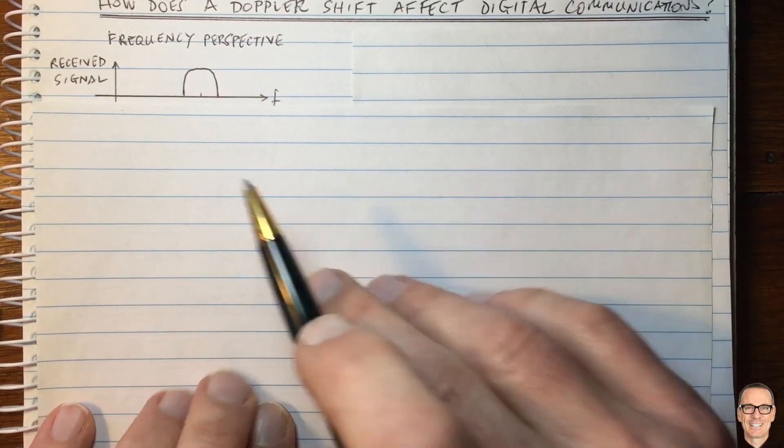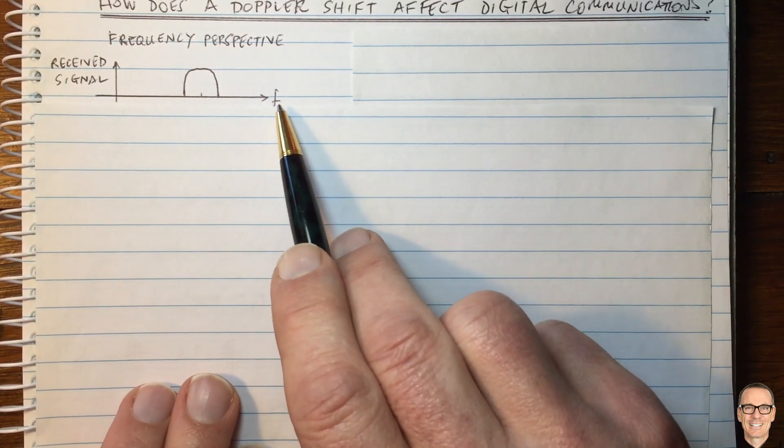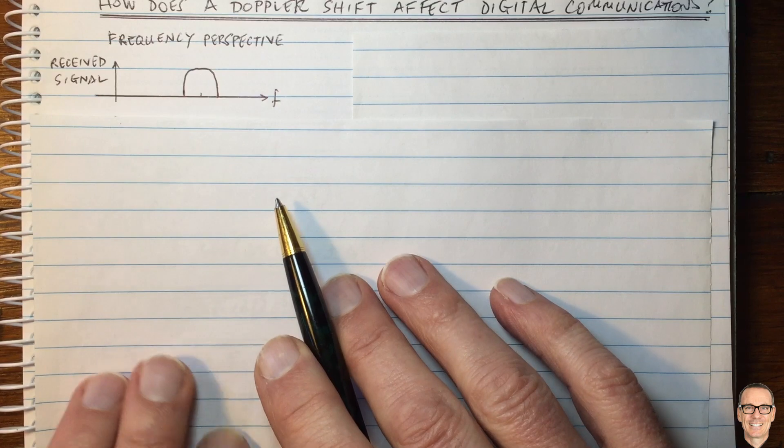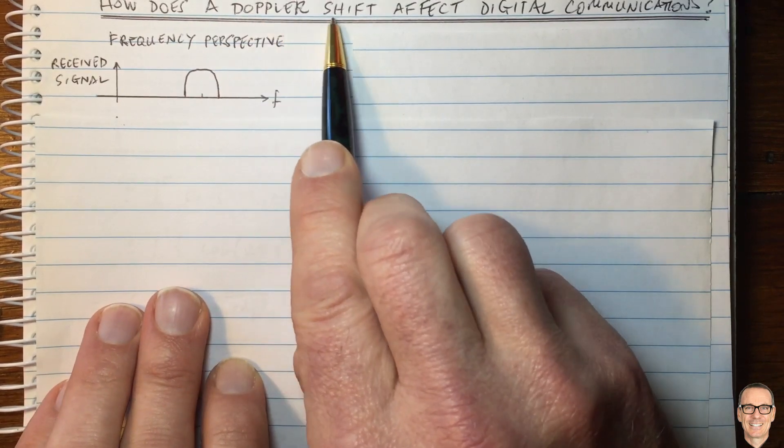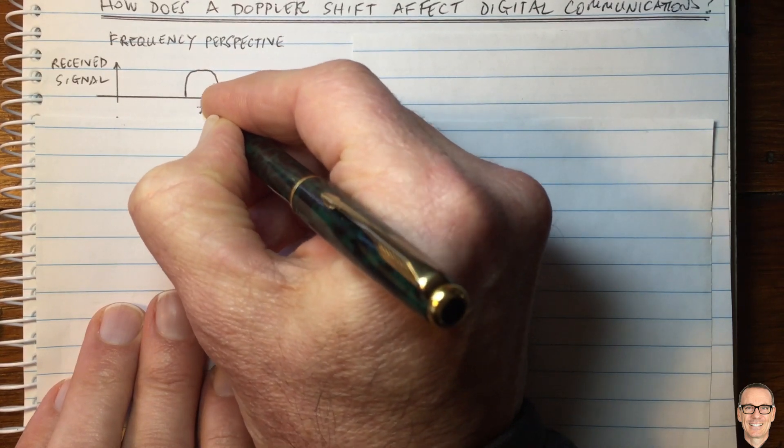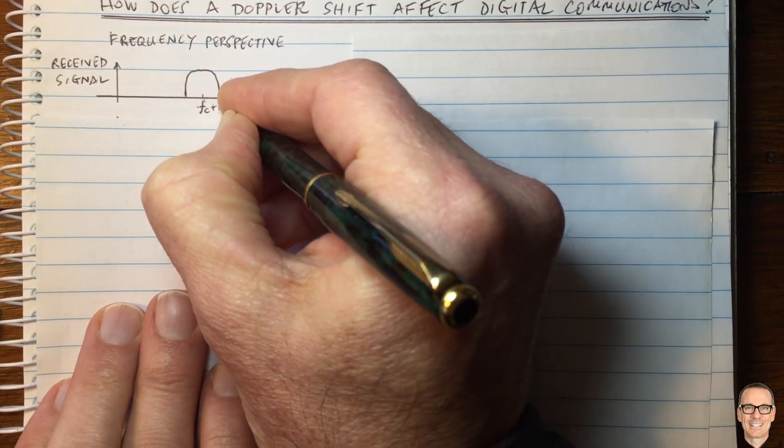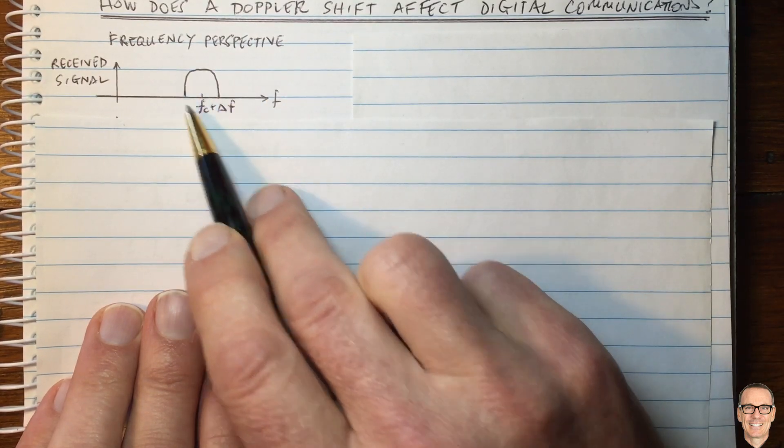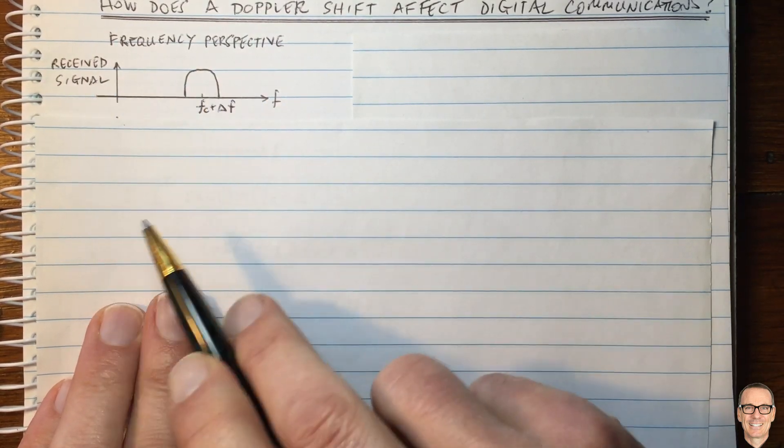Here we have a received signal shown in the frequency domain, and it occupies a given bandwidth. And if it has undergone a Doppler shift, then this central frequency at the receiver will be the carrier frequency plus some extra. We'll call that delta F. So this is what's going to be seen at the receiver.